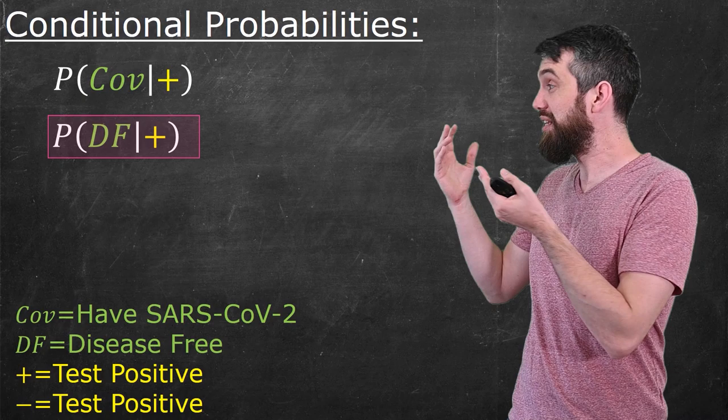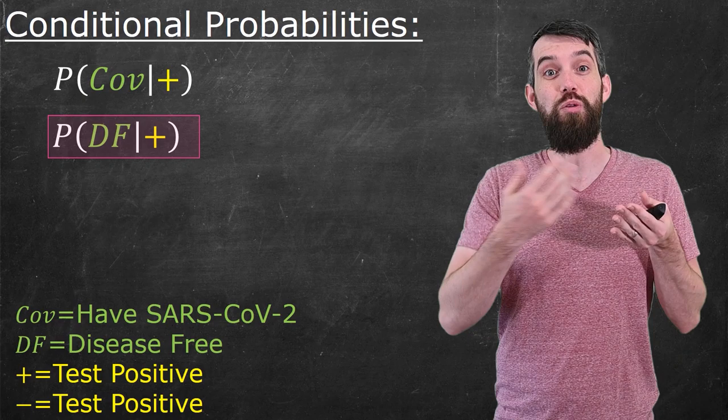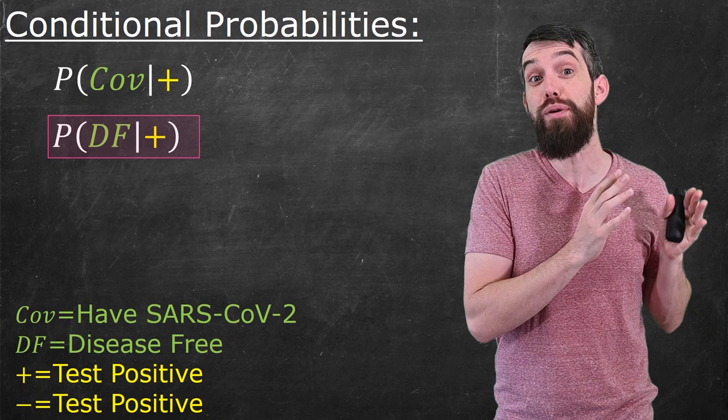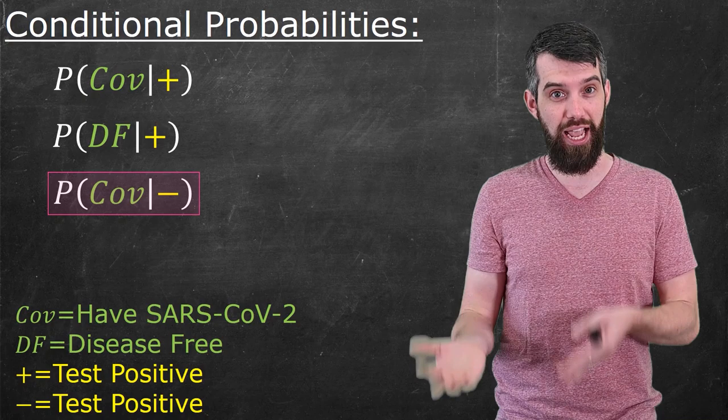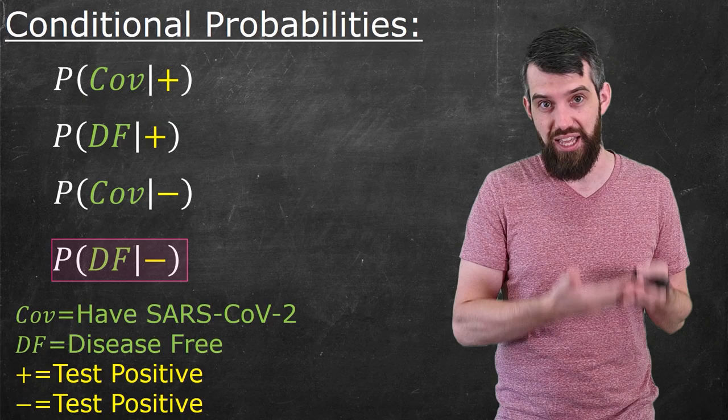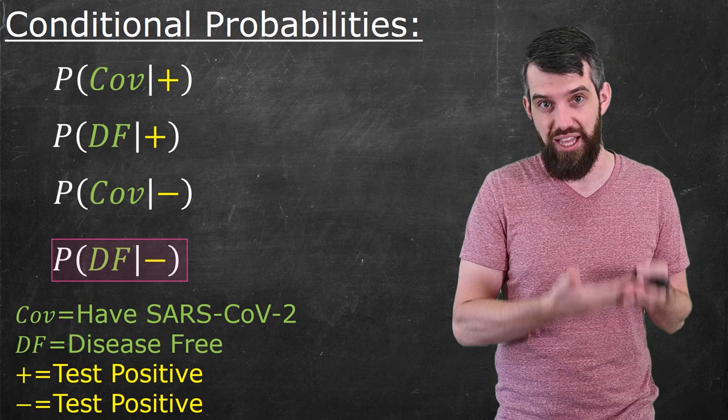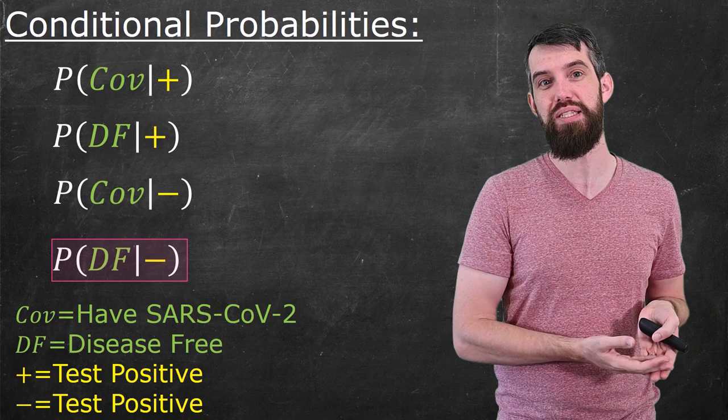There's a whole bunch of different conditional probabilities. For example, another one is, what is the chance that you're disease-free if you test positive? This would be a false positive. It's saying you test positive, but you don't actually have it. You are disease-free. So that's another thing I'd be really interested in knowing. Likewise, you can ask, what is the probability that you have COVID-19 despite the fact that you test negative? That's a false negative. And then finally, we can ask, what's the probability that you're disease-free given that you test negative? All of these numbers are between 0 and 1, or 100%.